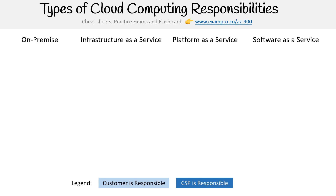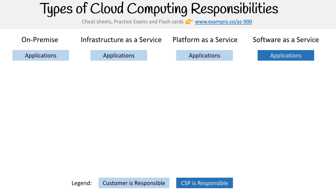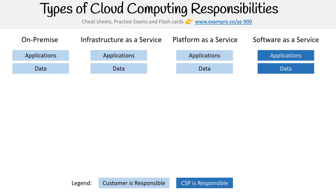When we're looking at applications, it's going to be the customer's responsibility for on-prem, infrastructure as a service, and platform as a service. But when we have software as a service, the cloud service provider is responsible for that. When looking at the data level, it's the same — for software as a service the cloud service provider is responsible, but for the rest it's going to be the customer.